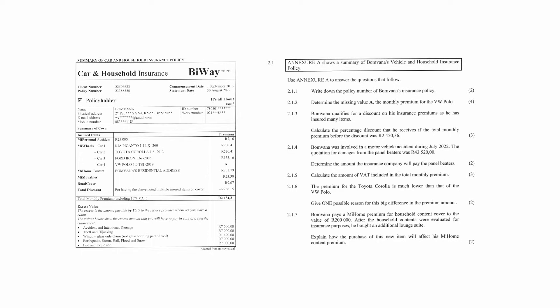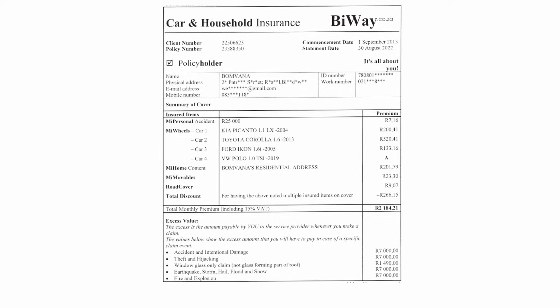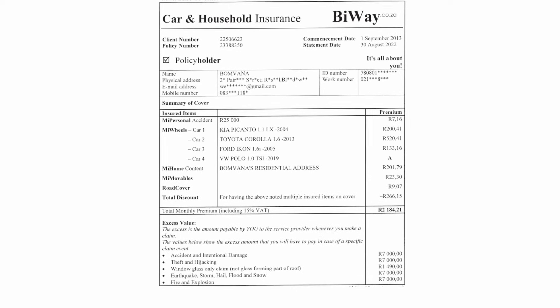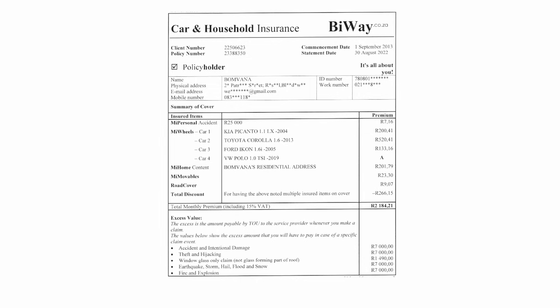Question 2.1 consists of seven finance questions designed to assess your understanding of financial statements in the context of an insurance policy. You are given a summary of a vehicle and household insurance policy in Annexure A, which you will use to answer the questions that follow. In question 2.1.1, you have to write down the policy number of this person's insurance policy. From Annexure A, the policy number can be read as 233-883-50.